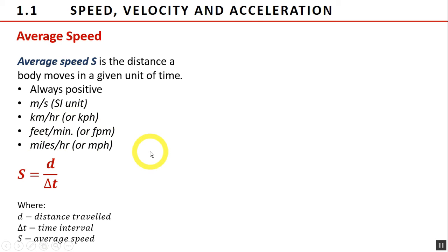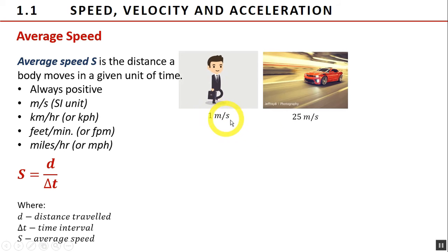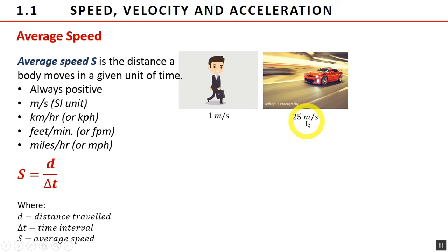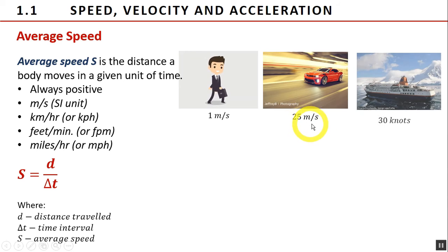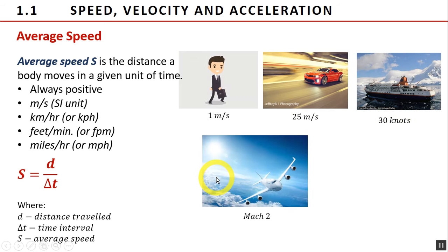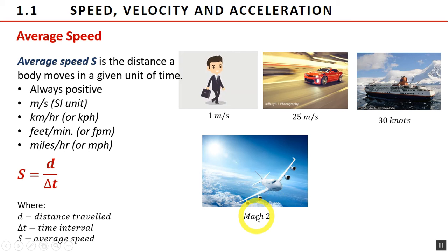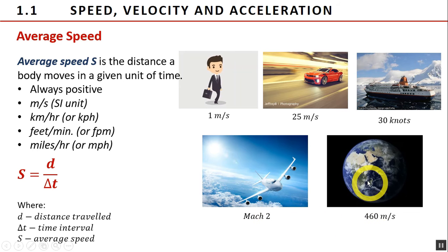The magnitude of speed varies with the ability of the object to move. A person can walk at an average speed of about 1 meter per second while a car can travel as much as 25 meters per second. Modern cruise ships can travel about 30 knots, or 55 kph. Modern airplanes and jet planes can travel as much as the speed of sound, around 300 meters per second. Mach is a unit used to measure the speed of these vehicles; Mach 1 means a speed equivalent to the speed of sound, and Mach 2 represents twice that speed. The Earth's equator is actually moving at around 460 meters per second.